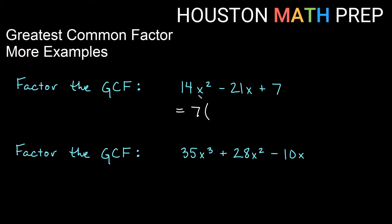So we're pulling out 7, then we say 7 times what gives us each term. 7 times 2 gives us 14, and since there are no variables outside, we need all of x squared, giving us 14x squared. Then minus: 7 times what gives me 21x? The answer is 3 and we also need an x. So I factored out 7.